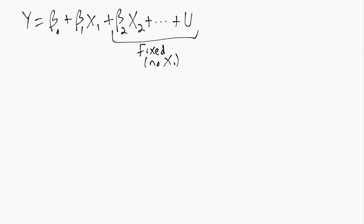So it might shift things up or down but if we're only thinking about changes in x1, x1 doesn't show up over there. So that part we can basically just ignore in terms of interpreting beta 1, the slope coefficient on x1.